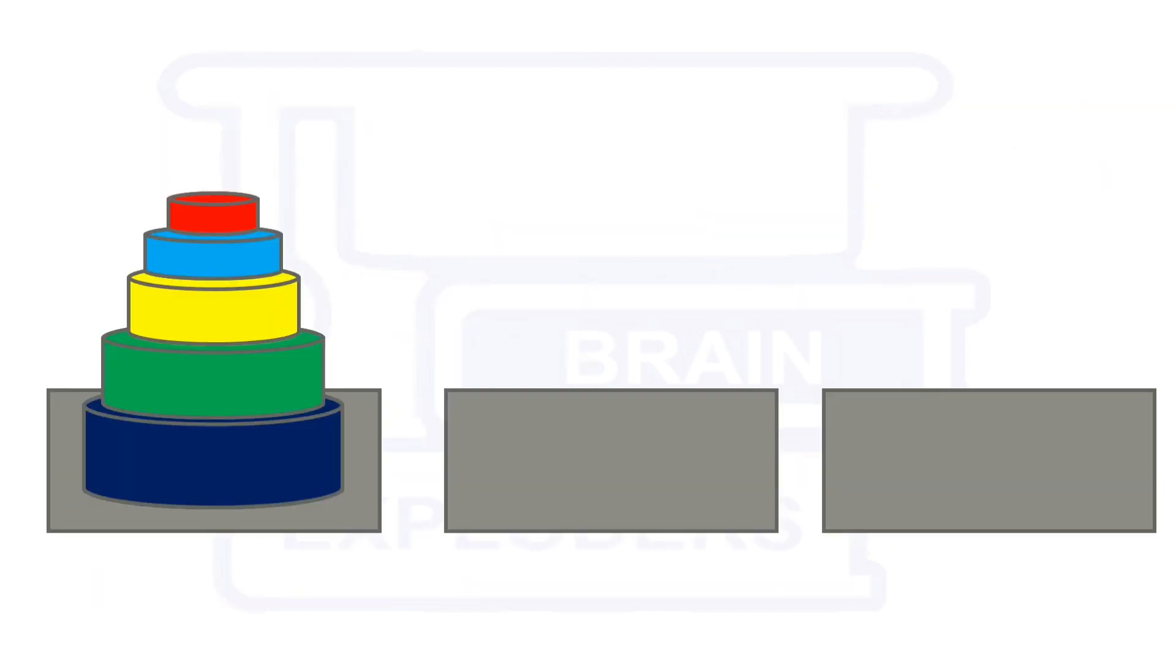For example, these are the 3 spaces and this is the stack of disks. Now, we cannot take 2 or more than 2 disks at a time. We have to take only the upper disk at a time from any of the stacks present on any of these 3 spaces and we can put it on any of the empty space or any larger disk. But any larger disk cannot be kept on any smaller disk.